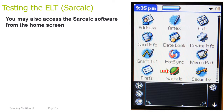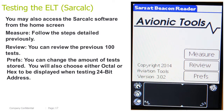You may also access the same SAR-Calc software from the home screen. Once open, you will see: Measure, which is the same as we just learned; Review, where you can review the previous 100 tests; and Preferences, where you can change the amount of tests stored and change the display between octal or hex address when testing 24-bit address.